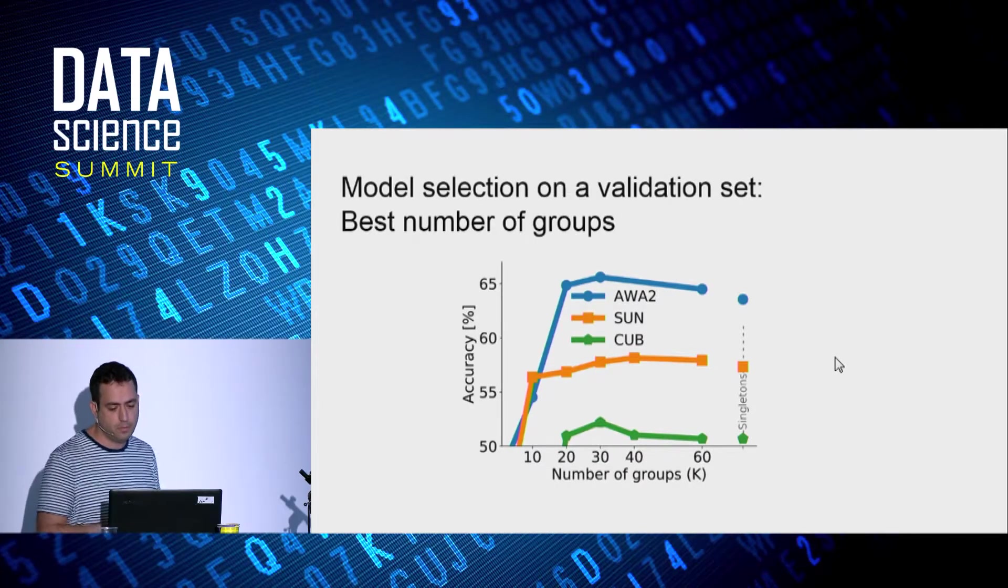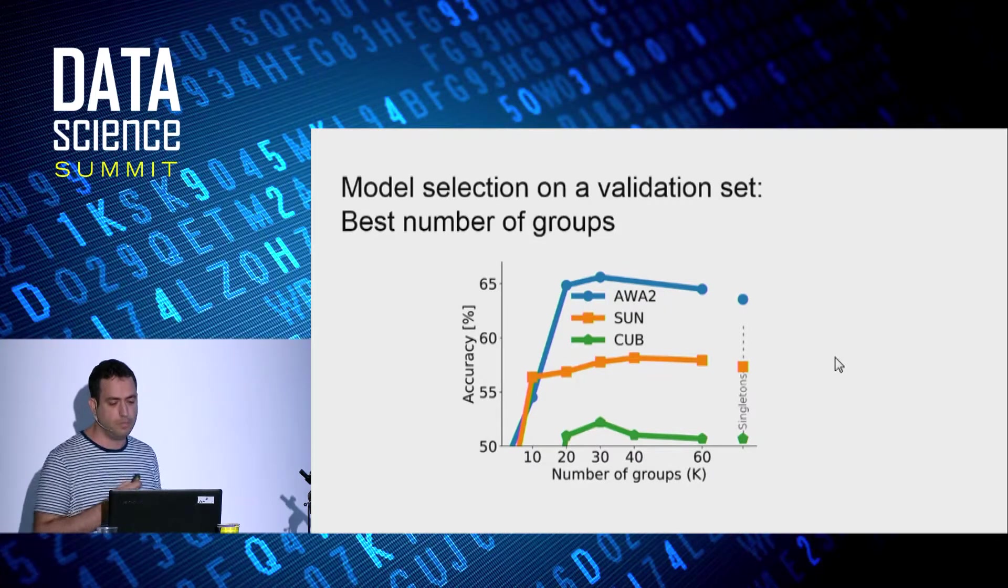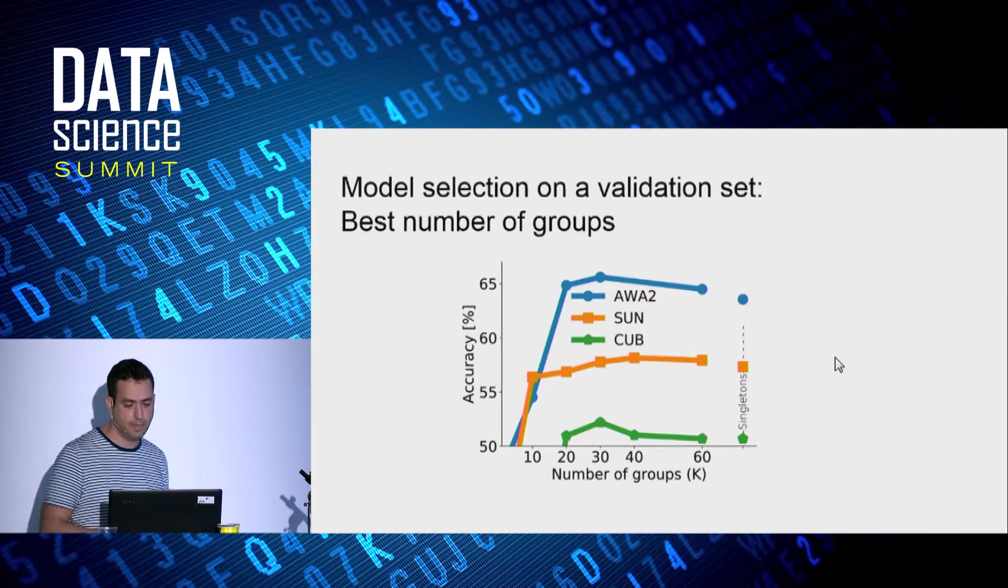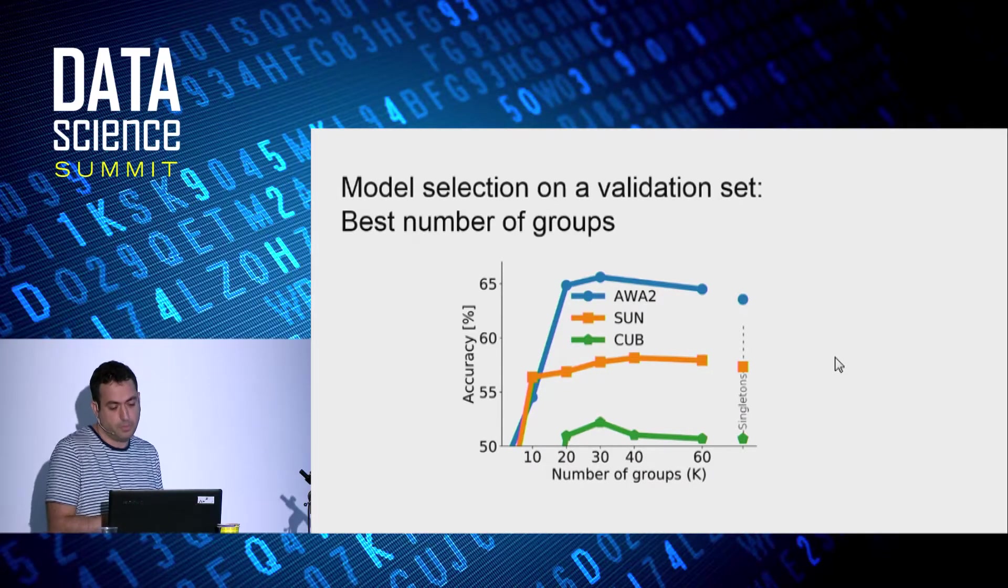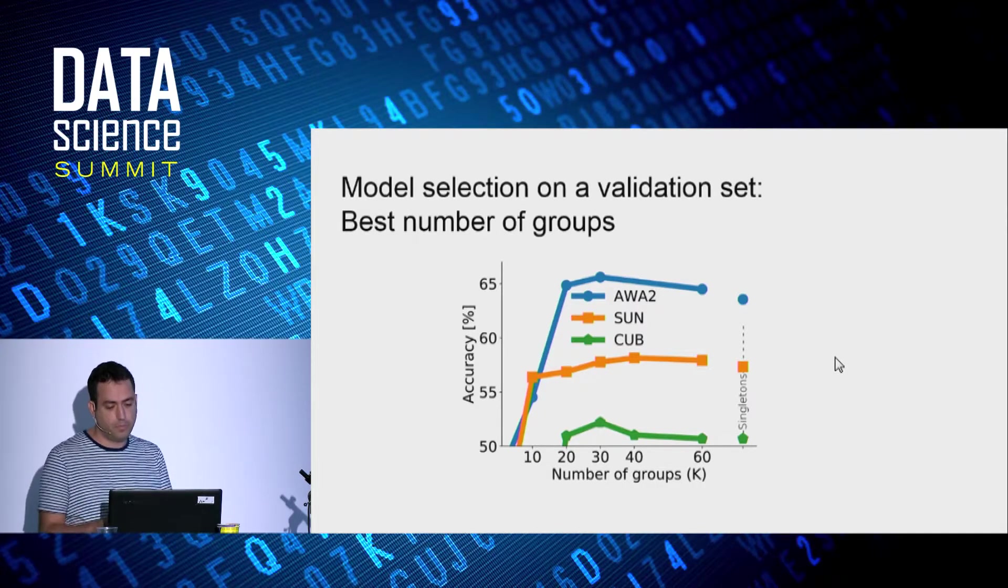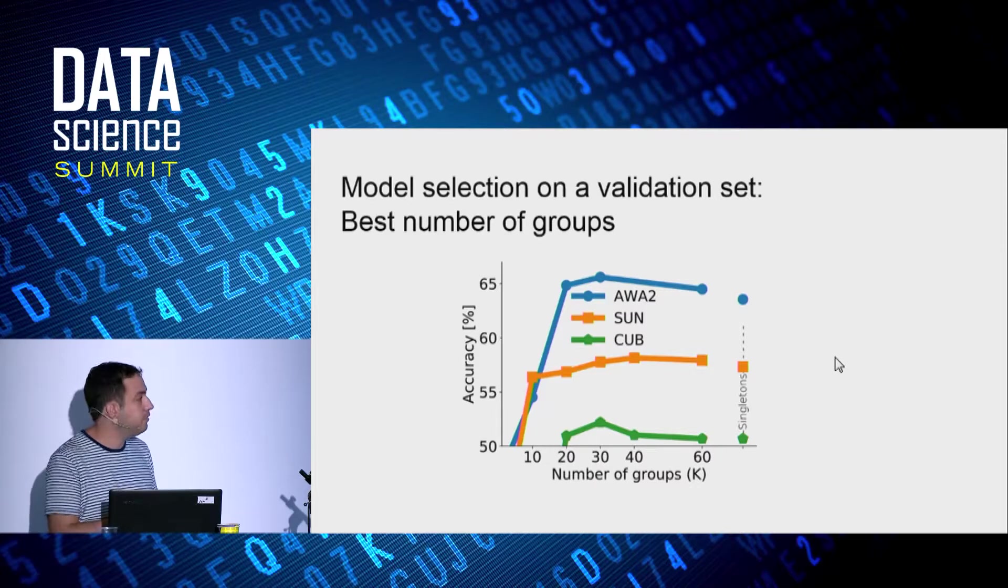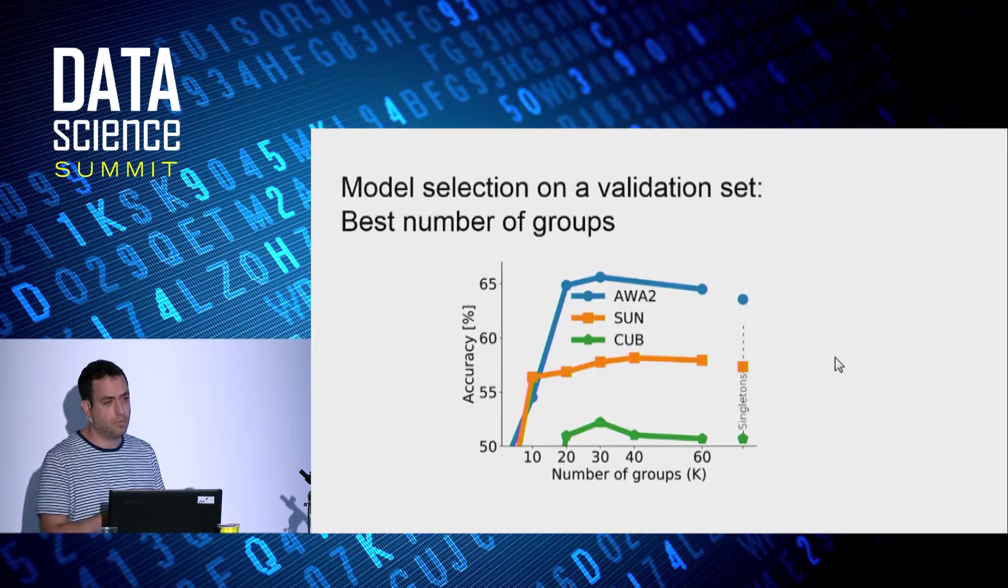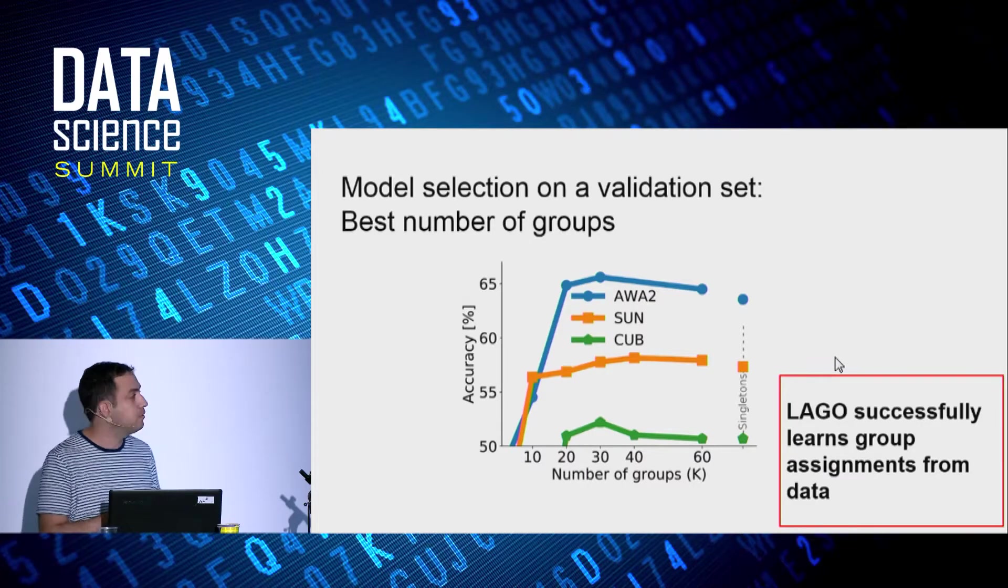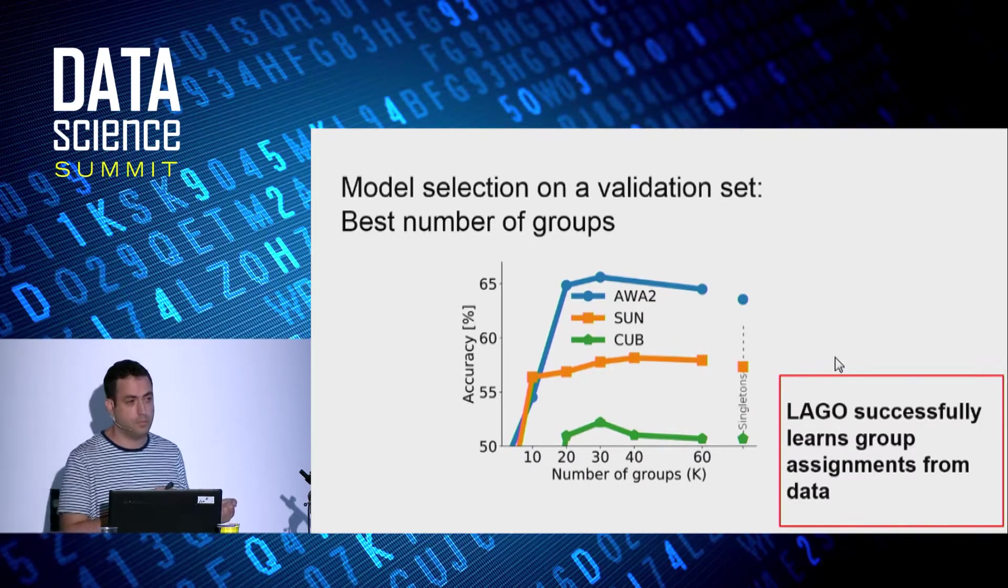In the first experiment, we did not use the knowledge about semantic grouping. But instead, we learned the groups from data. The parameter of groups, since we don't know how many groups are there, the number of groups is a hyperparameter. We call it k. And we use cross-validation to select the optimal number of groups, k. And we observe that LAGO successfully learns group assignments from data.